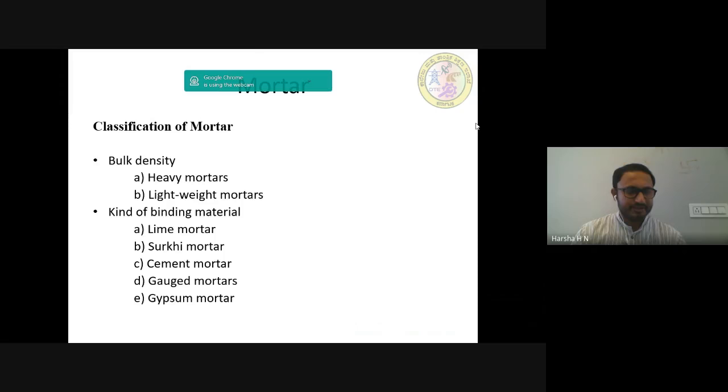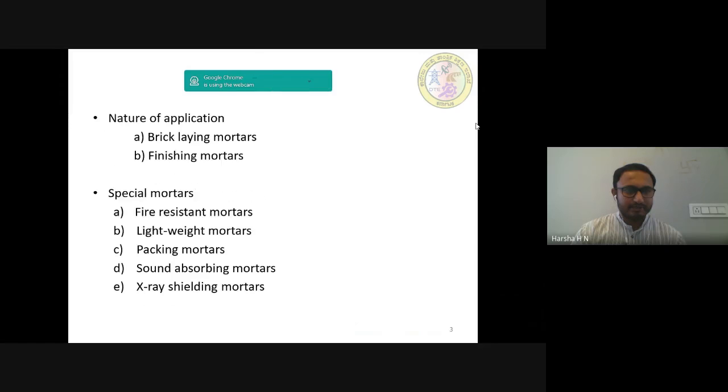Next third one is nature of application. According to the nature of application, the mortars are classified into two categories. Brick laying mortar. The mortars for brick laying are intended to be used for brick work on walls. Depending upon the working conditions and type of construction, the composition of masonry mortars with respect to the kind of binding material is decided. Second one is finishing mortars. These mortars include commonly plastering work and mortars for developing architectural or ornamental effects. The cement or lime is generally used as binding material for ordinary plastering mortars. For decorative finishing, the mortars are composed of suitable materials with the consideration of mobility, water retention, resistance to atmospheric actions, etc.